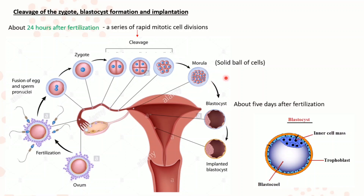About 3 to 4 days after fertilization, the morula reaches the uterine cavity and gets nutrition from the endometrium secretions. About 5 days after fertilization, a large fluid-filled cavity is formed surrounding the ball of cells. With the formation of this cavity, this developing stage is referred to as the blastocyst. Further rearrangements of the cells in the blastocyst result in two distinct structures: the inner cell mass and the trophoblast.